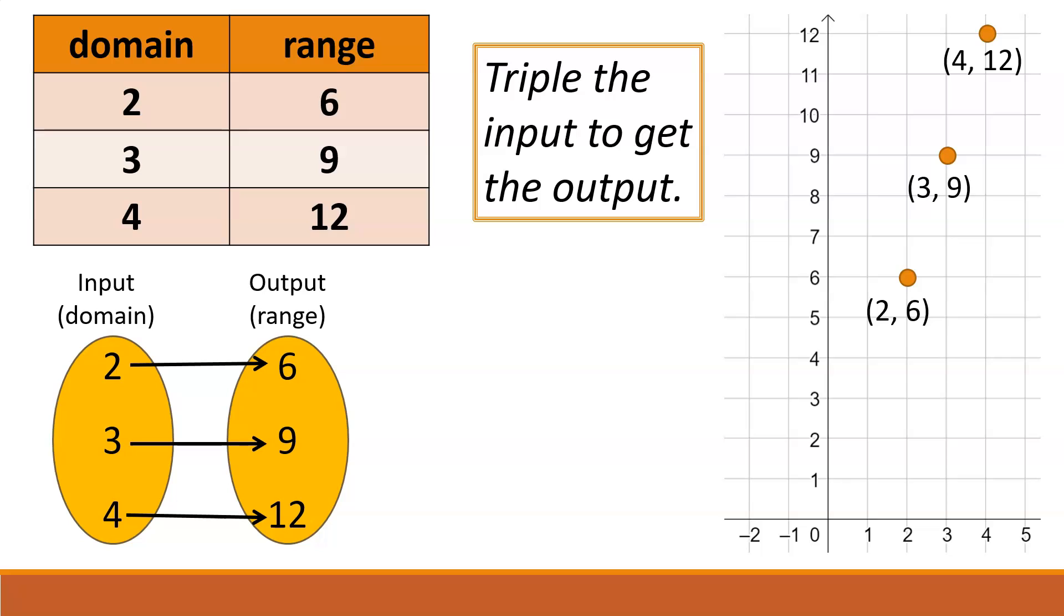We could also represent the relation with words, if we can describe what goes on from the domain number to its corresponding range number. In this case, if we triple the input, we'll get the corresponding output. So we could say triple the input to get the output.